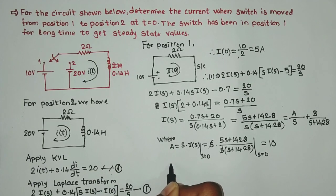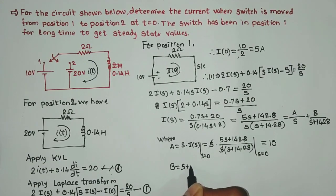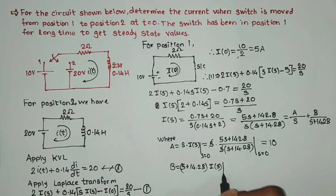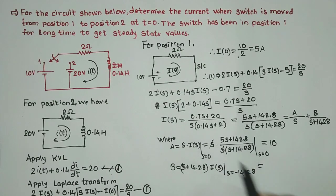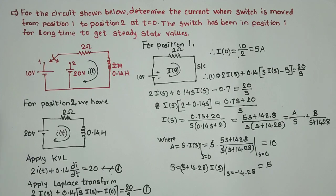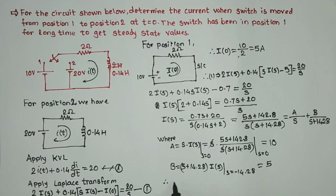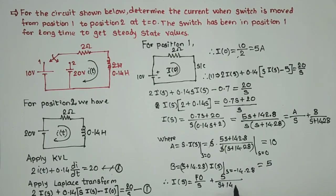Similarly, to find B: B equals (s plus 14.28)·I(s) evaluated at s equals minus 14.28. Using the same method, B equals 5. Therefore we have I(s) equals 10/s plus 5/(s plus 14.28).